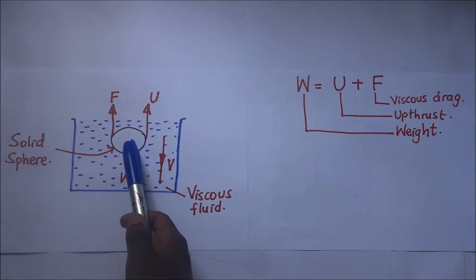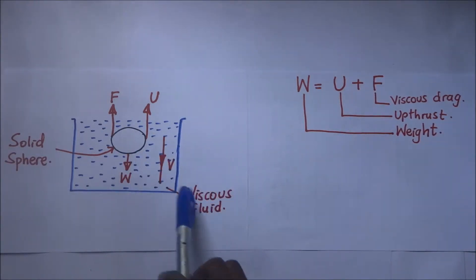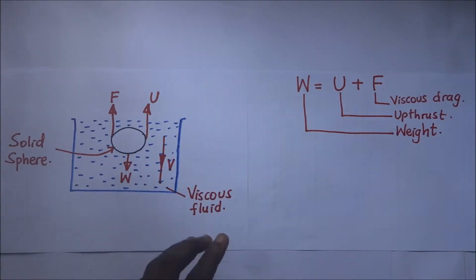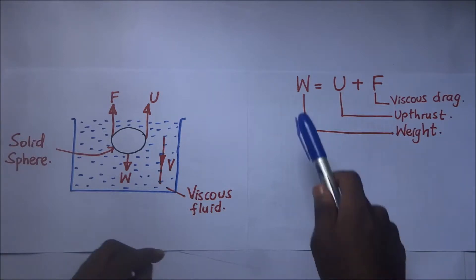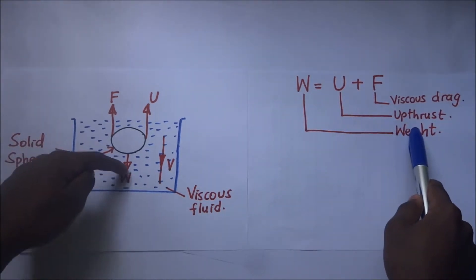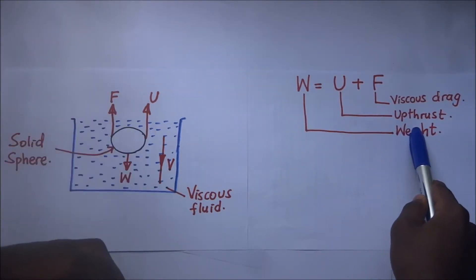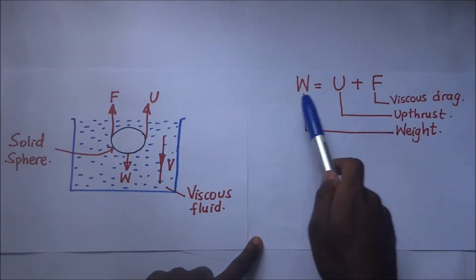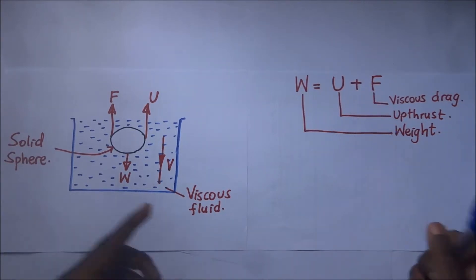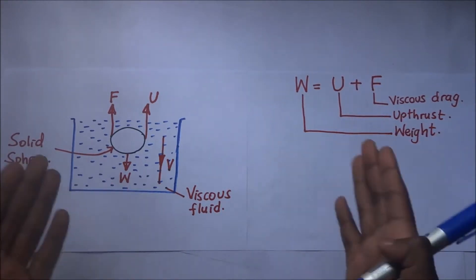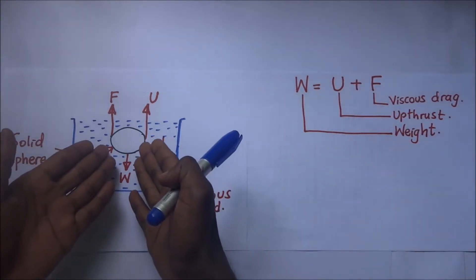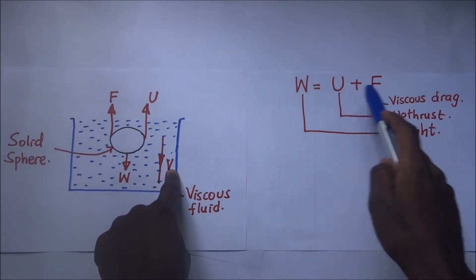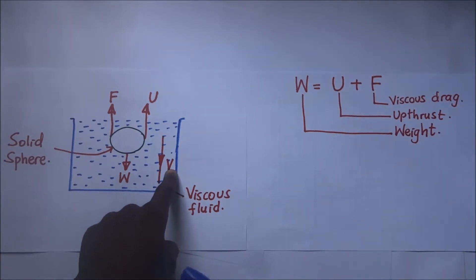We have this solid sphere falling through the viscous fluid. When terminal velocity is achieved, the weight acting downward equals the upward forces — the upthrust and the viscous drag. When these are equal, the body is falling through the liquid at terminal velocity. Now we want to use this condition to find the expression for terminal velocity.